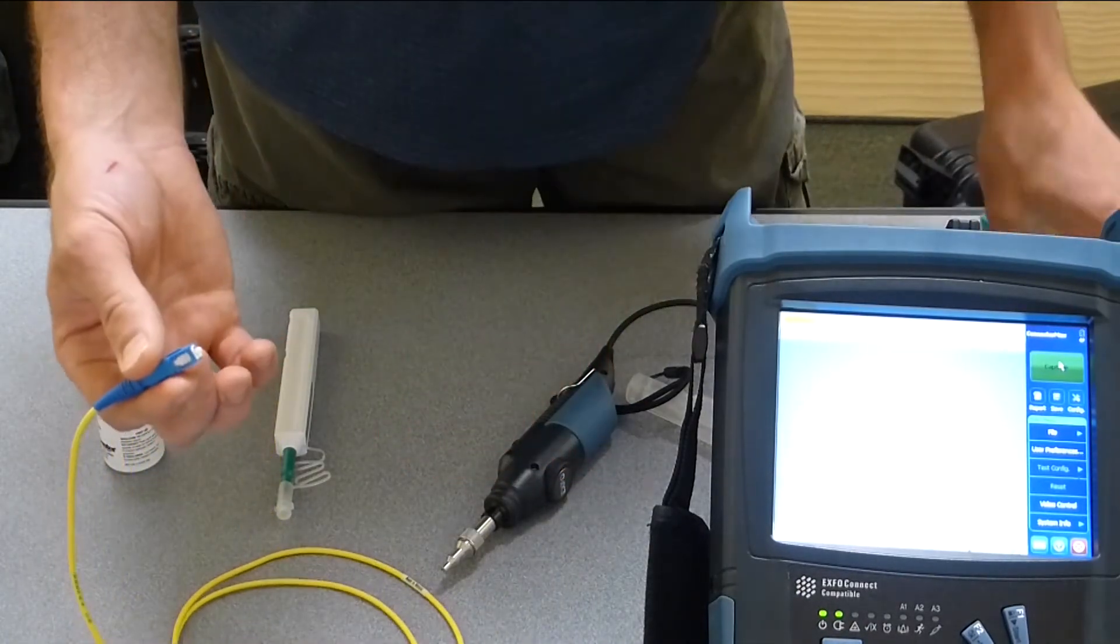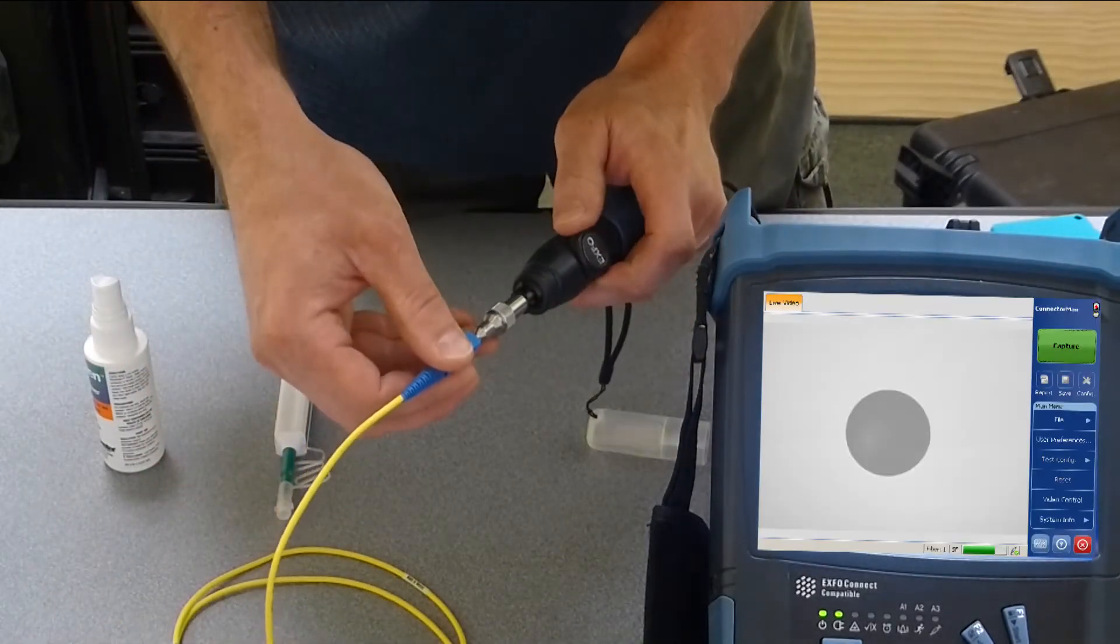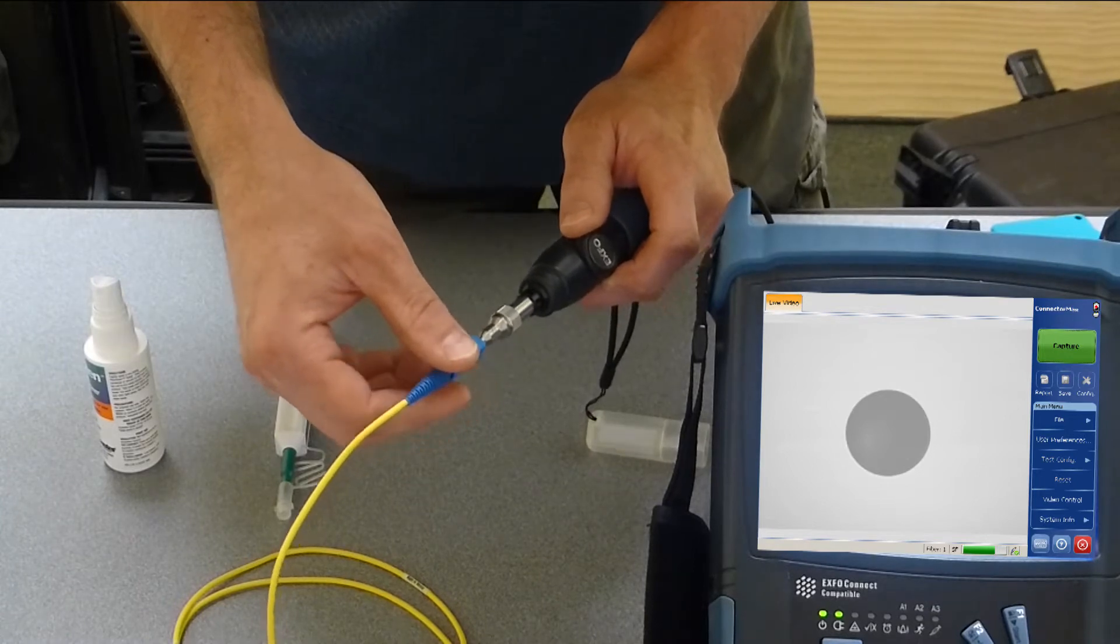So we'll just swipe that end face across the tape of the cleaner and then install it back into the probe and we can see that that connector is nice and clean.